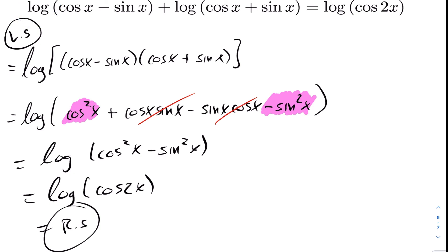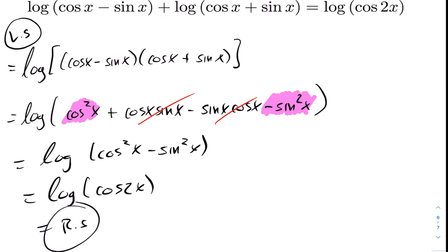Simplifying, we get log(cos²x − sin²x), which is exactly equal to log(cos 2x) — our right hand side. Applying logarithm properties, expanding, simplifying — we've proven this trig identity involving logarithms. That concludes today's lesson on trig identities.